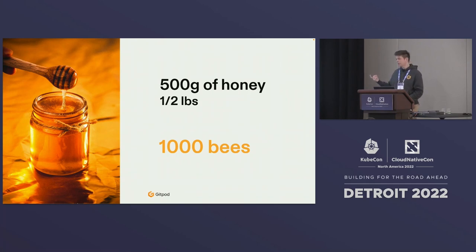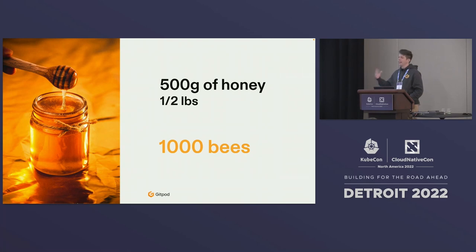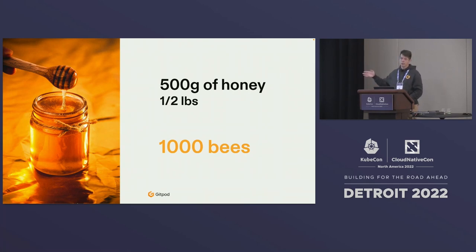The reason bees live 43 days is because they quite literally die of exhaustion — they keep collecting and collecting until they just can't anymore. A single jar of honey represents a thousand bees.